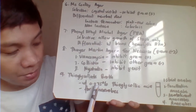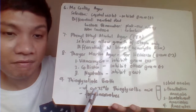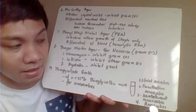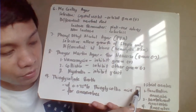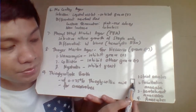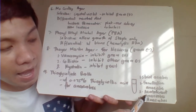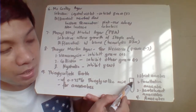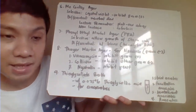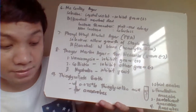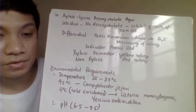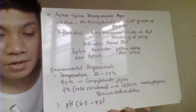Thayer-Martin is selective for Neisseria growth, incorporating vancomycin to inhibit gram-positive organisms, colistin to inhibit gram-negative organisms, and nystatin to inhibit yeast. Thioglycolate broth contains 0.75% thioglycolic acid, creating an anaerobic environment. Strict aerobes grow at the top, facultative anaerobes grow just below the upper surface, aerotolerant anaerobes grow throughout, and strict anaerobes grow at the bottom where there is no oxygen.